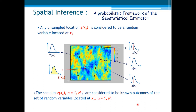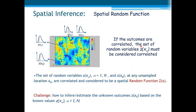Now let us see another probabilistic framework. At any unsampled location, z(x_0) is considered to be a random variable located at x_0. And the samples z(x_α) are considered to be known outcomes of the set of random variables located at the sample locations. So, if the outcomes are correlated — they are not independent — the set of random variables z(x_α) must be considered correlated. And the set of random variables z(x_α) and z(x_0) at any unsampled location x_0 are correlated and can be considered to be a spatial random function Z(x). This is the basis of our probabilistic framework of our geostatistical estimator.